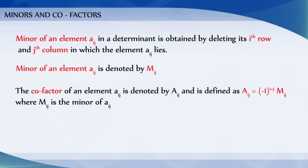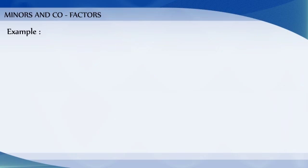The cofactor of an element aij, denoted by capital Aij, is defined as: capital Aij equals minus 1 whole to the power i plus j, multiplied by Mij, where Mij is the minor of aij. For example,